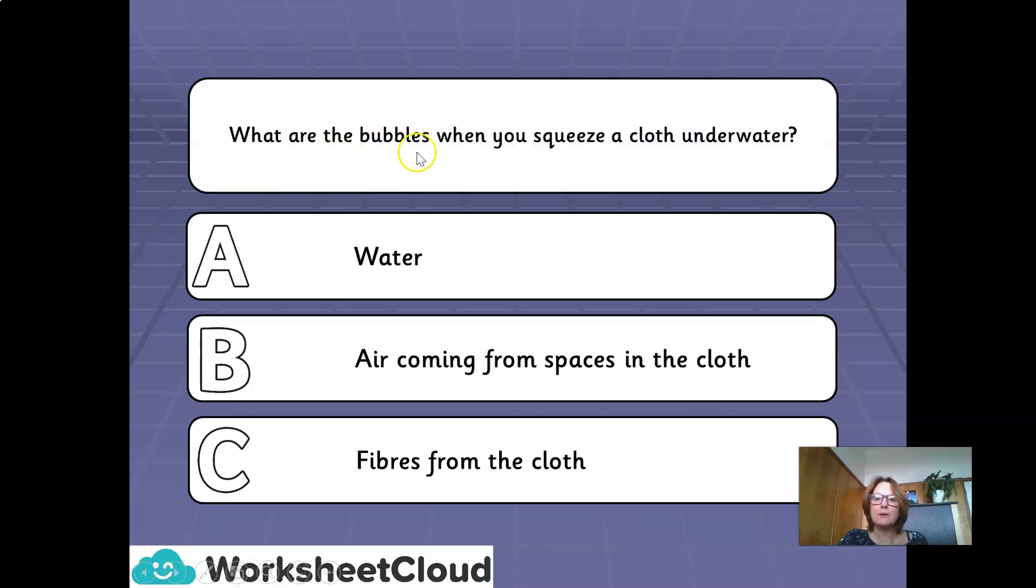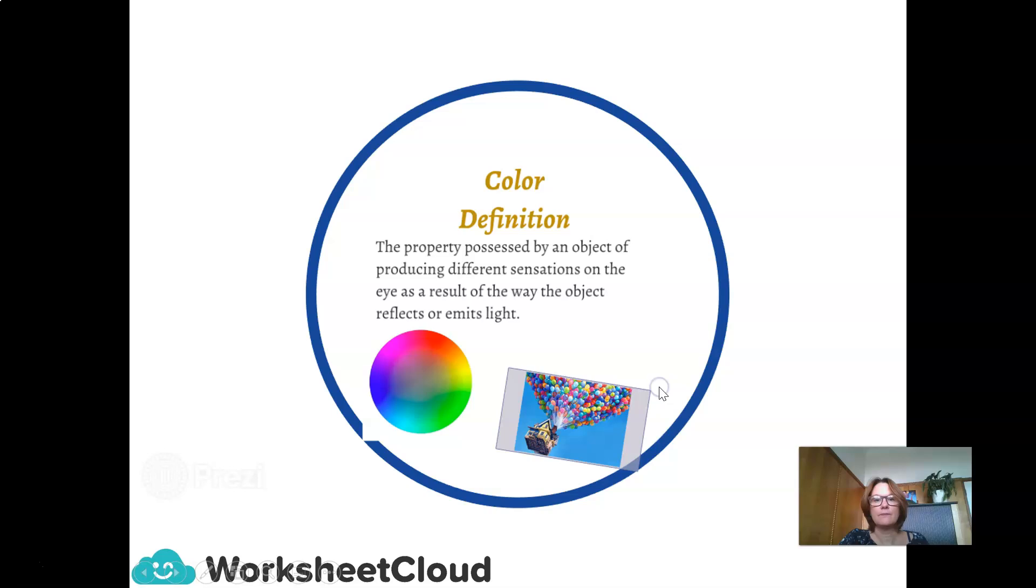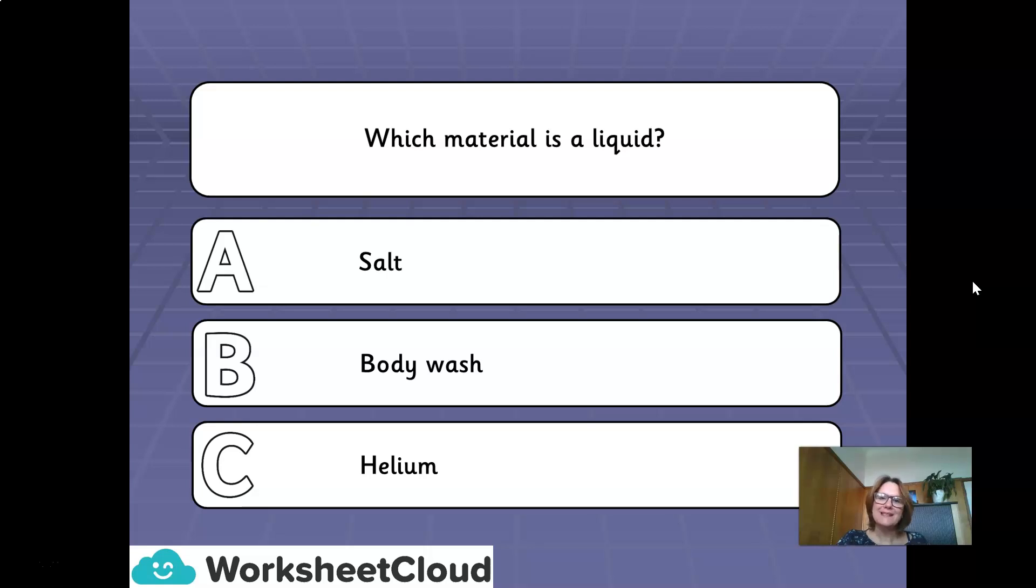What are the bubbles when you squeeze a cloth underwater? Is it A. Water. B. Air coming from spaces in the cloth. Or C. Fibers from the cloth. It is B. Air coming from spaces in the cloth. Which material is a liquid? Is it A. Salt. B. Body wash. Or C. Helium. B. Body wash. Well done to those who got it.